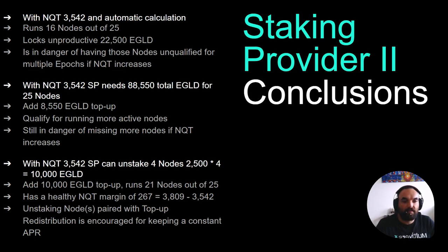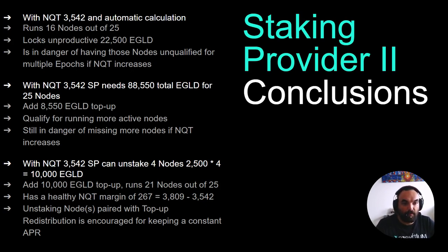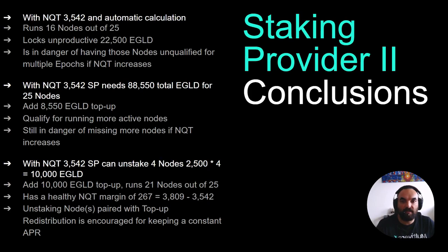The second strategy would be to unstake 4 nodes — freeing 10,000 EGLD to use as top-up for the remaining 21 nodes. This gives them a better position, increasing top-up per node to 3,809, putting them at a healthy NQT margin of 267 EGLD above the network NQT. This is a more interesting strategy if the staking provider cannot acquire 10,000 EGLD in top-up within a week or a few days — they could explore unstaking some nodes instead.